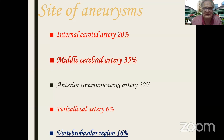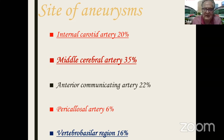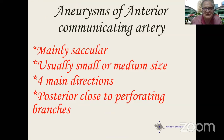These are the sites of aneurysms in the Finnish database. Anterior communicating artery aneurysms are 22%, excluding the pericallosal artery aneurysms, which are for some reasons rather common in the Finnish population. ACoA aneurysms are mainly saccular, usually small or medium size. In our database there were only two giant-sized anterior communicating artery aneurysms.